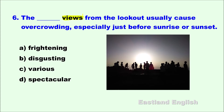Views are what you see from the lookout. Overcrowding means too many people. Whatever is in the blank must be a very positive thing — it must attract many people. Disgusting is something not at all attractive; it causes distaste or revulsion. A fright is a scare, so frightening means scary. Although various could be a possible option, it's not the best one — certainly there would be various views from a lookout. Spectacular means amazing or fantastic — it's the best choice. Number six: The spectacular views from the lookout usually cause overcrowding, especially just before sunrise or sunset.